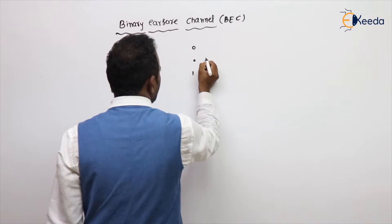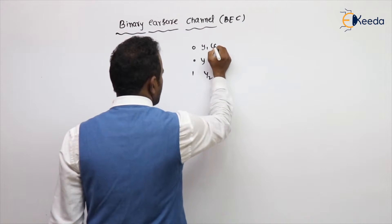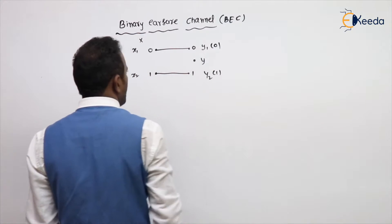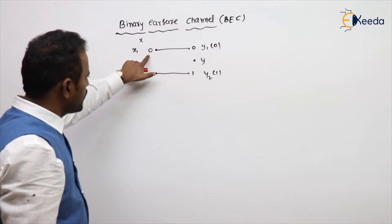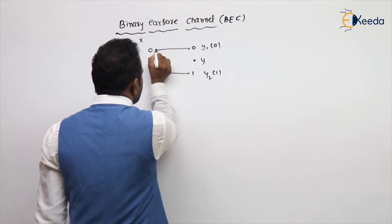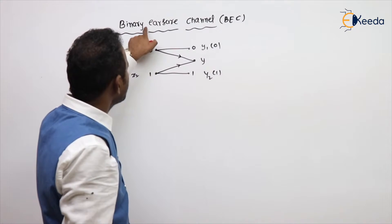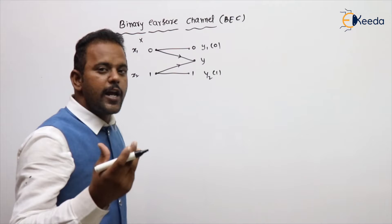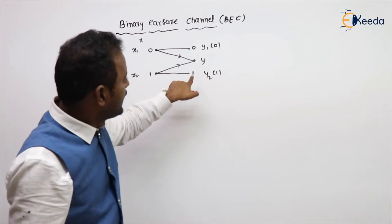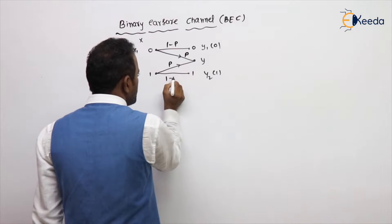You can treat the outputs as y1, y2, and y. So corresponding to 0 and 1 already written. If you transmit 0, it might be received as 0; 1 is received as 1. But in some cases there is uncertainty — the transmitted bit is erased. This is why it is called the Binary Erasure Channel. We take the probability of erasure as p, so the correct reception probability is 1 minus p on each side.